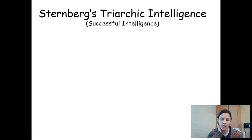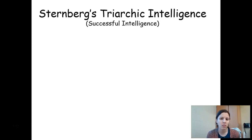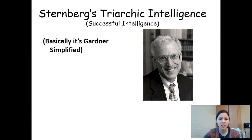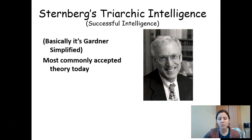The triarchic theory is from Bob Sternberg, and he actually agreed with Gardner's theory of multiple intelligences, but he thought that nine was too many. So he tried to simplify it down into just three, which is why we call it the triarchic theory of intelligence. Sometimes it's nicknamed the successful theory of intelligence, and this is really the most commonly accepted theory of what intelligence is today and how we measure it.